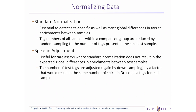To adjust for differences in sequencing depth and mapping efficiency between samples, normalization is performed. Normalization is essential to detect site-specific as well as global differences in target enrichments between samples. Tag numbers of all samples within a comparison group are reduced by random sampling to the number of tags present in the smallest sample. Spike-in adjustment can be useful for rare assays where standard normalization does not result in the expected global differences in enrichments between test samples. If spike-in of Drosophila chromatin was performed, the number of test tags are adjusted by downsampling by a factor that would result in the same number of spike-in Drosophila tags for each sample.